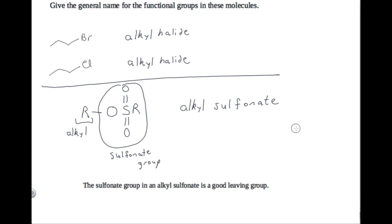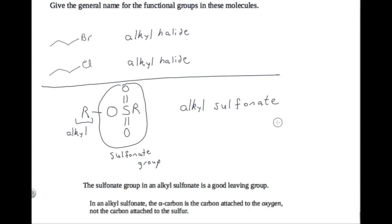It will be important for us to identify the alpha carbon in a sulfonate. Where is the alpha carbon? Is it connected to the oxygen or to the sulfur? You need to memorize that in an alkyl sulfonate, the alpha carbon is the carbon attached to the oxygen, not the carbon attached to the sulfur. That should make sense because when the sulfonate leaves, it leaves the alkyl group behind.